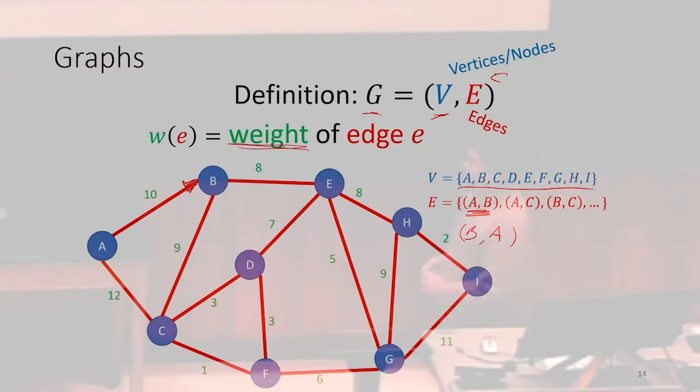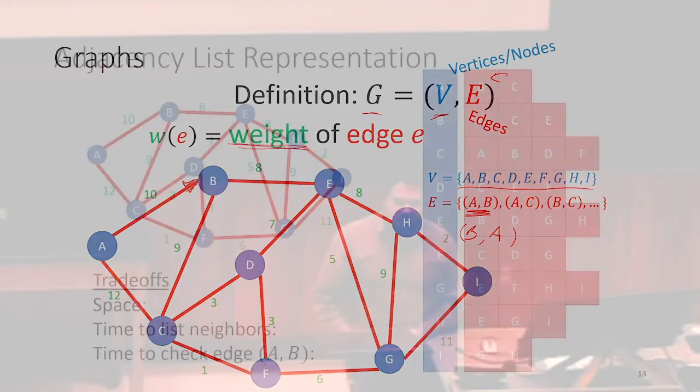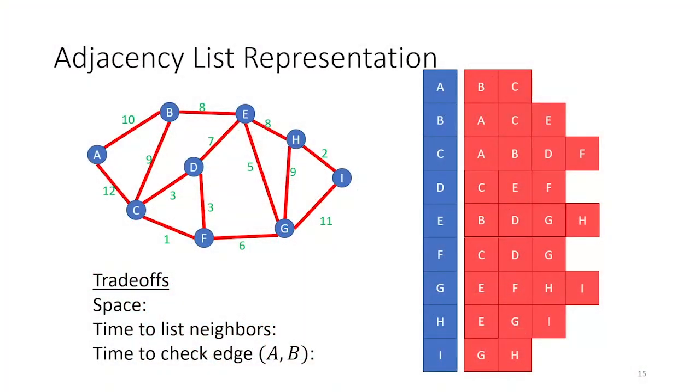And there are several different ways that we can represent these graphs if we wanted to write them down as data structures. One way we might do this is with an adjacency list. We say that two nodes are adjacent to one another if they share an edge. So we can have this adjacency list representation where for every single node that's in our graph, I'm just going to have a separate list of everything adjacent to it.